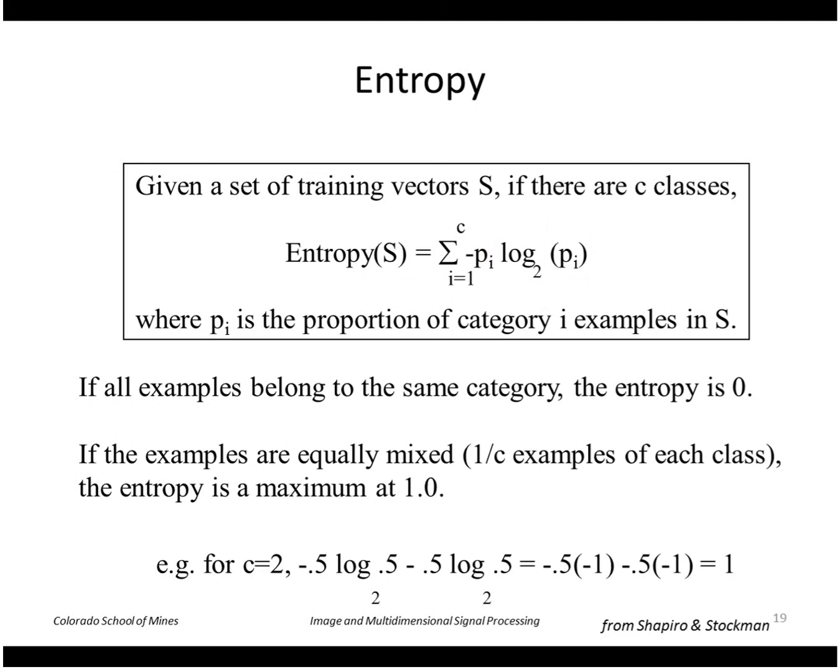The other extreme would be if all of the examples are equally mixed. So the probability is equal, it's just one over C for each feature. So in that case the total entropy sums to one.